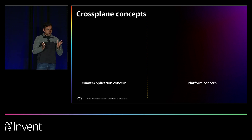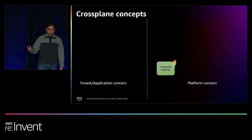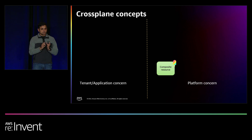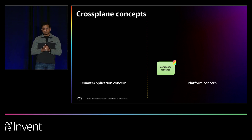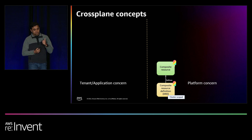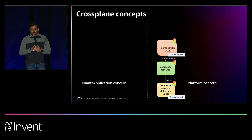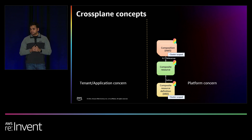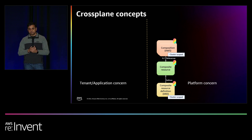Before we talk about the entire workflow, let's talk a little about the Crossplane concepts. We see two sections: application concern and platform concern. The platform team is responsible for creating what in Crossplane terminology are called composite resources. Composite resources are an abstract concept, defined by the platform team using a Composite Resource Definition (XRD) — these are cluster-scoped resources. The platform team also defines a set of compositions for the composite resource, and multiple compositions are possible for one composite resource — for example, a composition for AWS, a composition for another cloud, or multiple compositions for the same cloud depending on requirements.